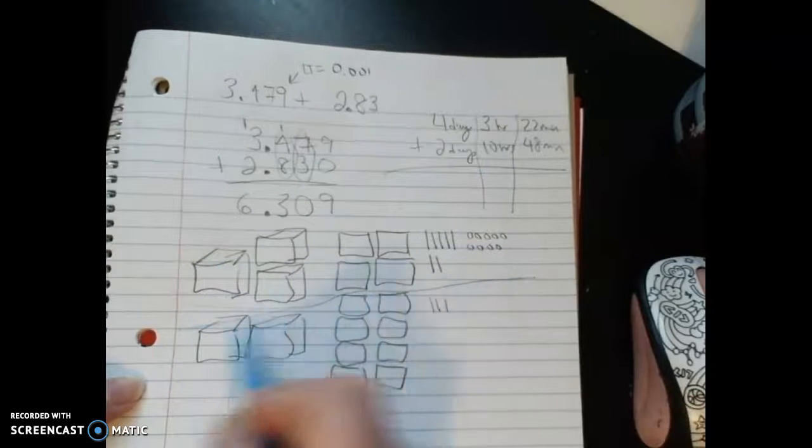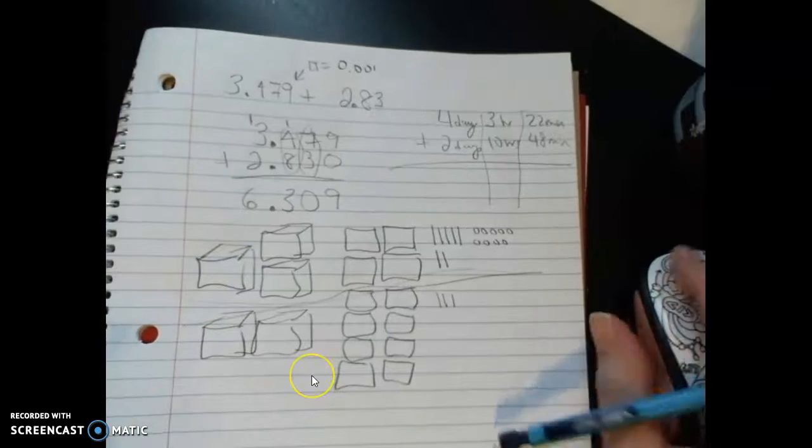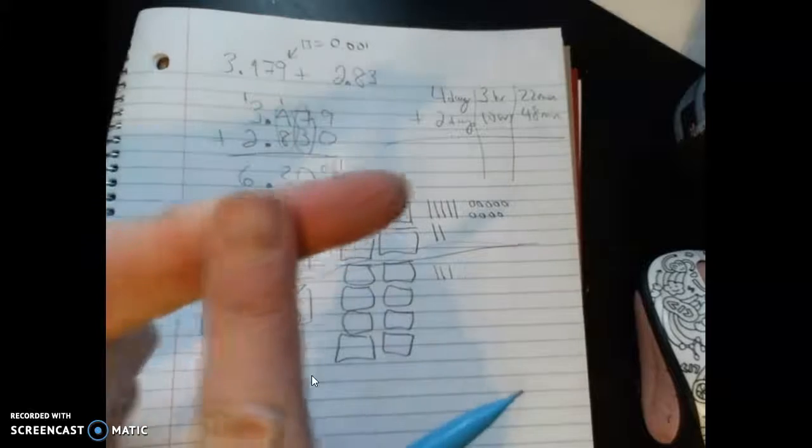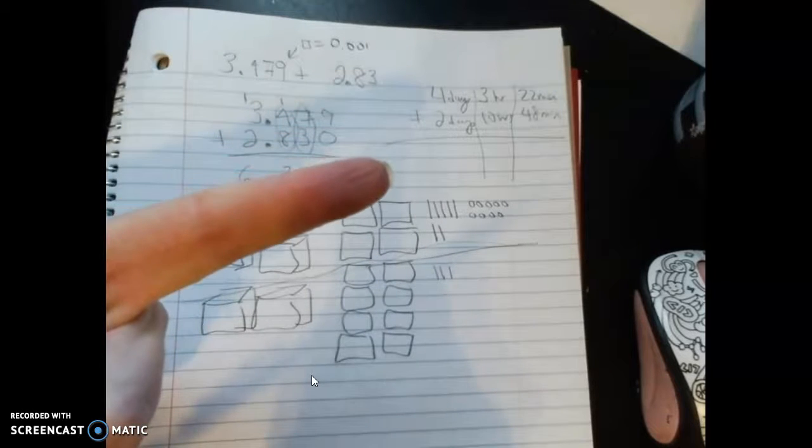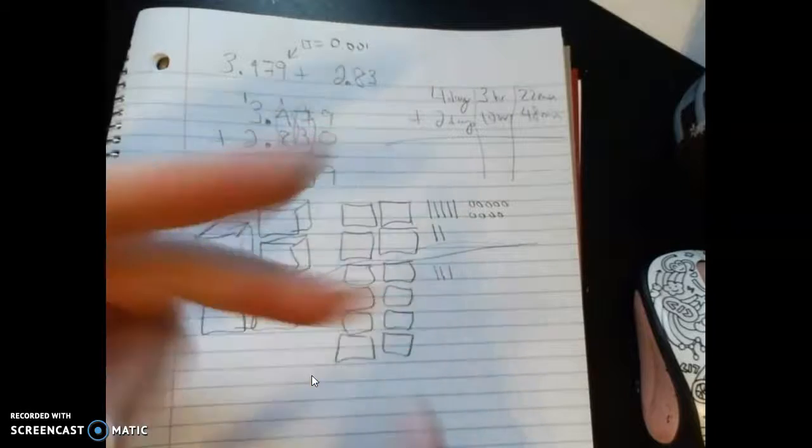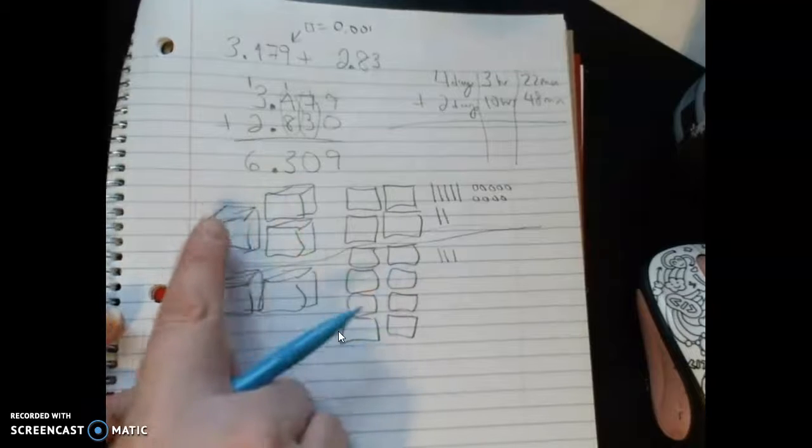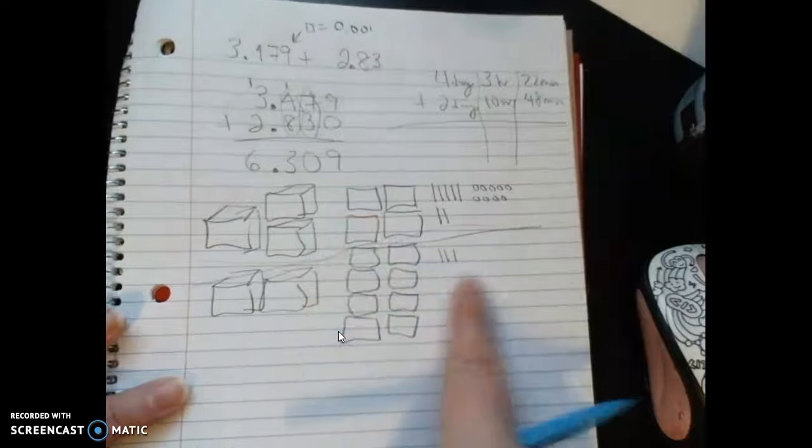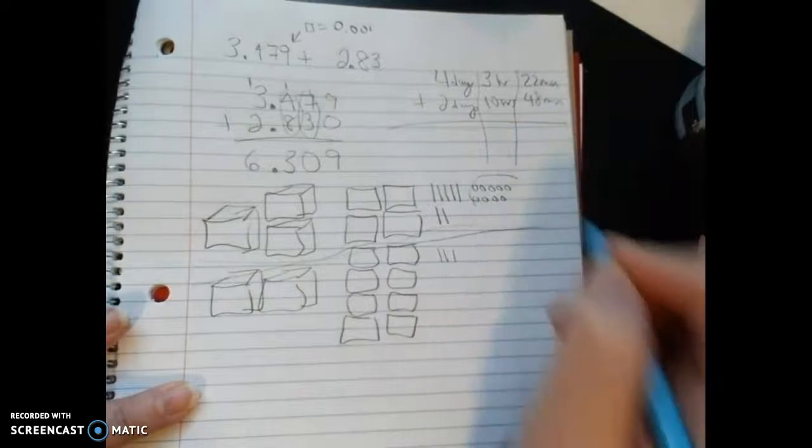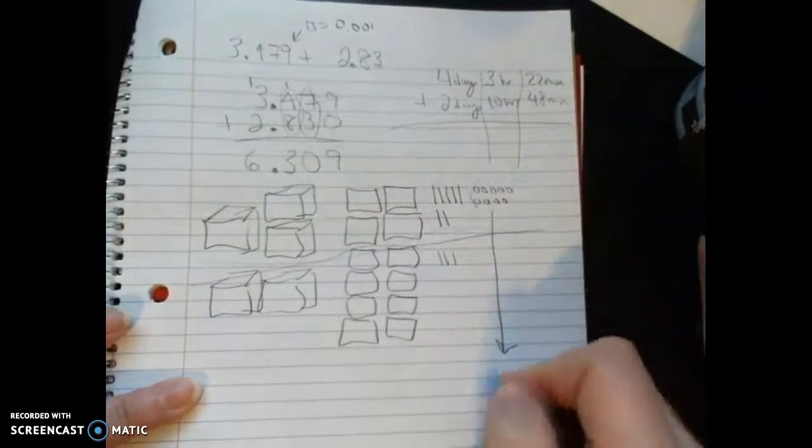I apologize for the interruptions—we have construction workers in our house and my sister had a surgical procedure, so the doorbell and phone keep ringing. So I built the first number and the second number. With base 10 blocks, I can't regroup these, so there's not enough to regroup—I have 9 singles.